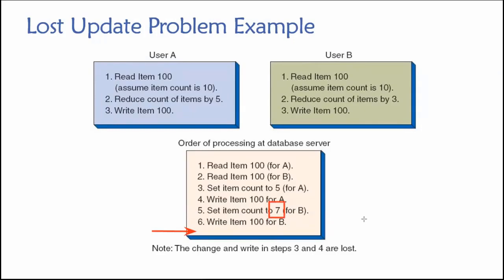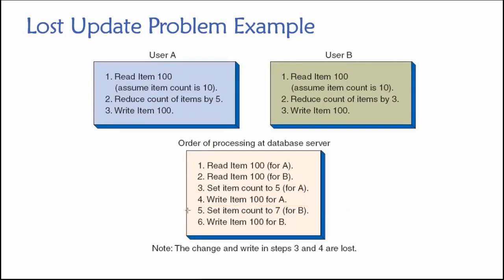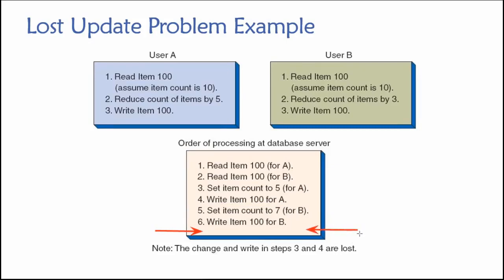That's what the database thinks, but we know it should be two. We now have an incorrect value in inventory because we lost user A's update. User A's changes from steps three and four were overwritten by the changes requested by user B. Instead of two units remaining — which is what we should have — the database reports seven units in inventory. This is a lost update problem.